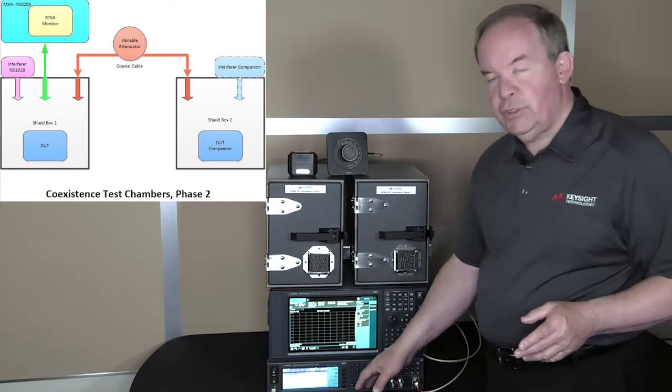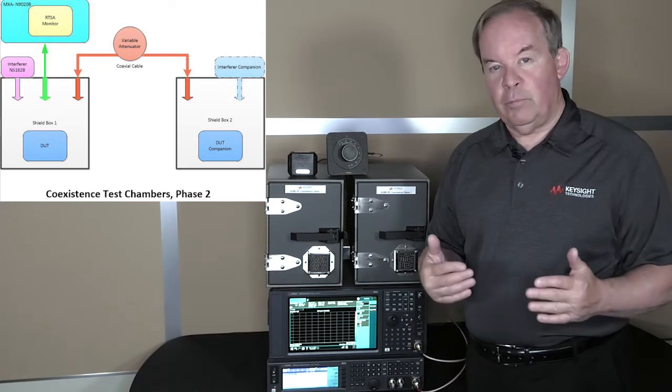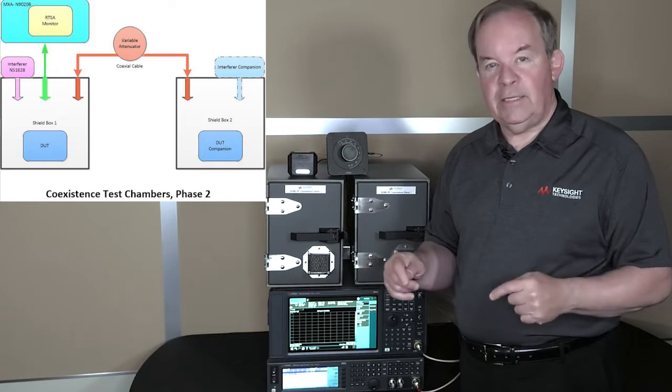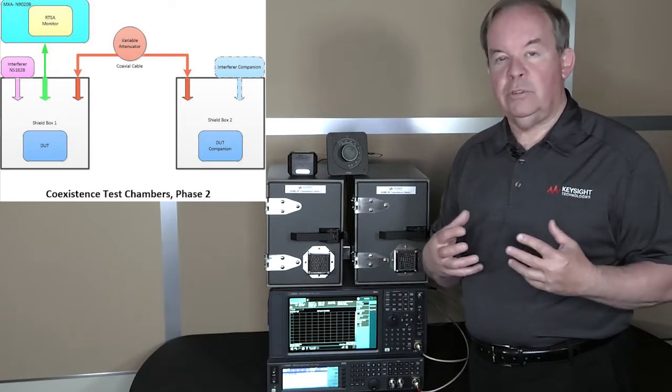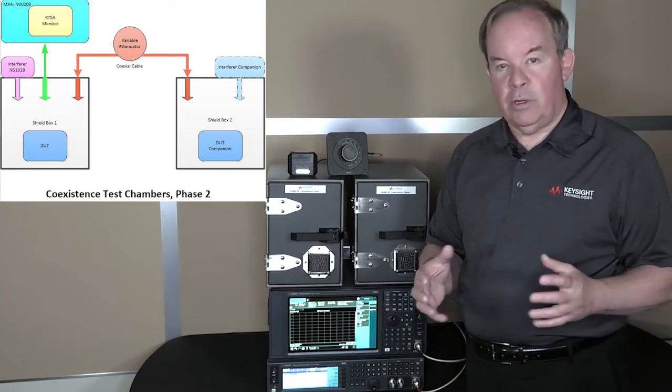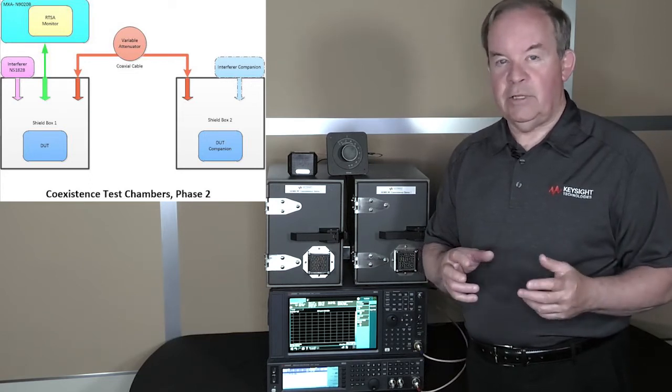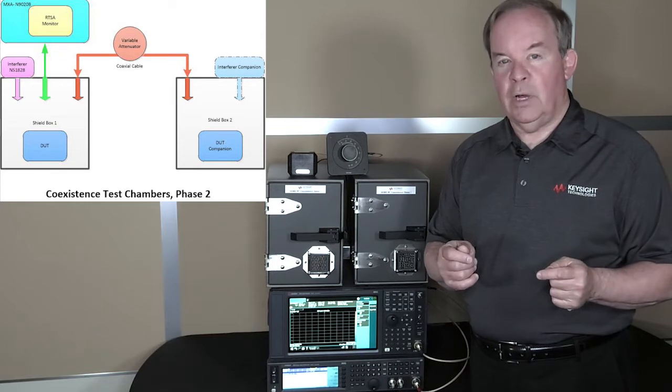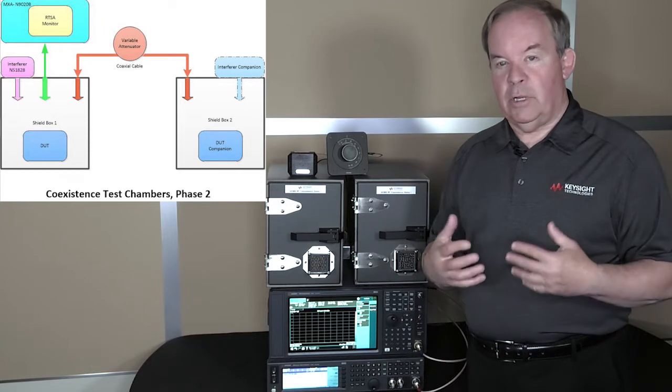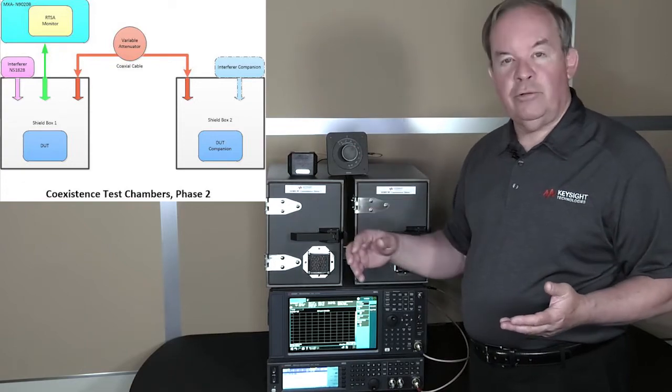Below it, we have a signal generator, the Keysight MXG, and that will be generating a Wi-Fi signal to interfere with the Bluetooth that's going on in the chambers. All of these are coupled together with antennas inside the chambers so that you have an actual device antenna, not a coaxial connection, to make this measurement on a real complete device. The reason for this is that some devices have built-in antennas and don't have a coaxial adapter to allow you to make a wired measurement. So, we're going to be making a wireless measurement on two devices separated in the two chambers, coupled by the attenuator and with the sound coming out through the speaker.